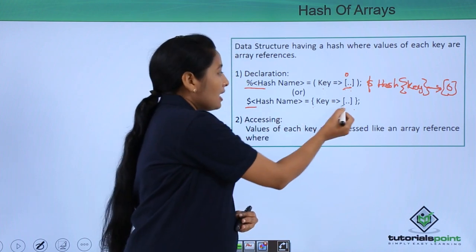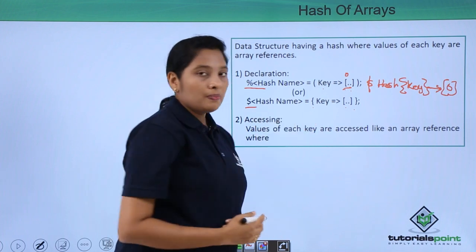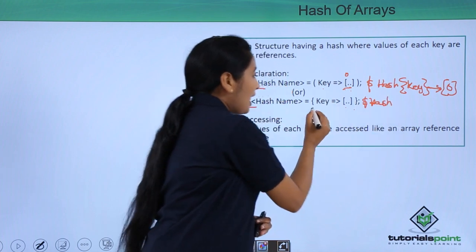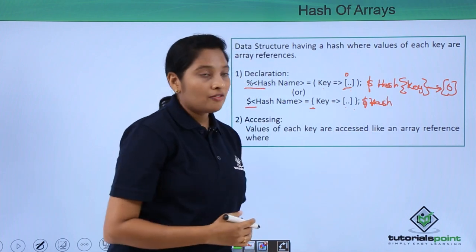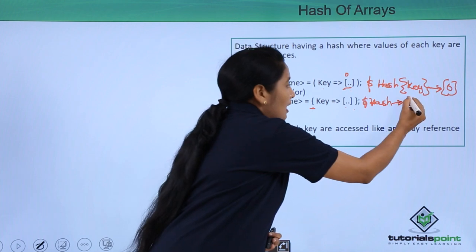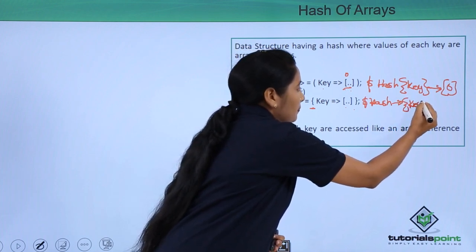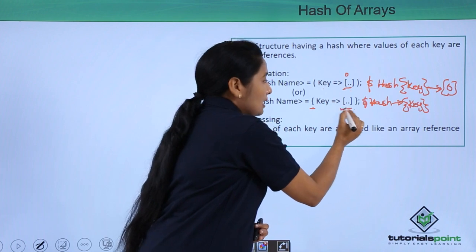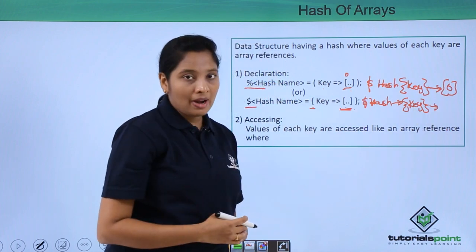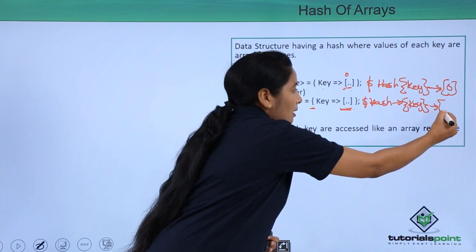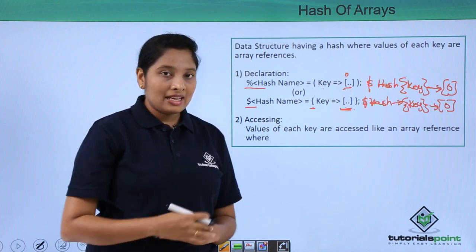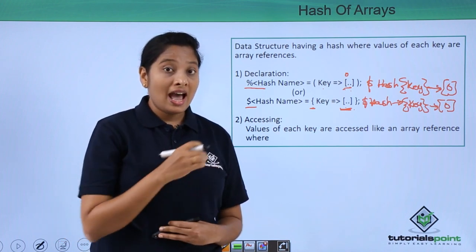To access elements in a hash reference, give the hash name. As the hash reference starts with a curly brace, you have to use an arrow symbol, then enclose the key name in curly braces. To access the element in the array reference, again use an arrow symbol since the array reference starts with a square bracket, then give the index number. This is how you can access elements inside the array reference as a value in a hash of arrays.